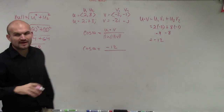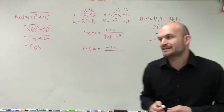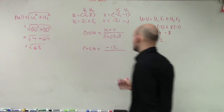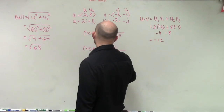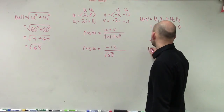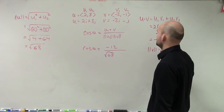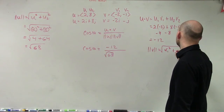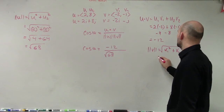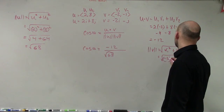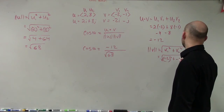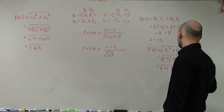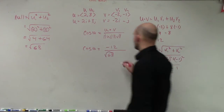That gives the square root of 68. Since we're finding an approximate answer, we don't need to simplify. For the magnitude of v: the square root of v1 squared plus v2 squared equals the square root of negative 2 squared plus negative 1 squared, which is the square root of 4 plus 1, equaling the square root of 5.